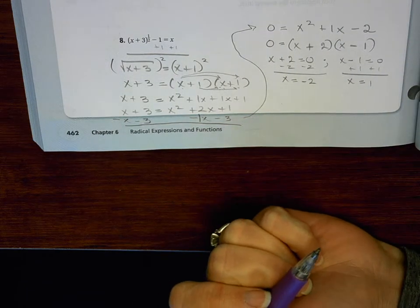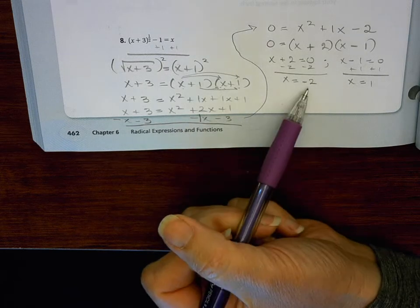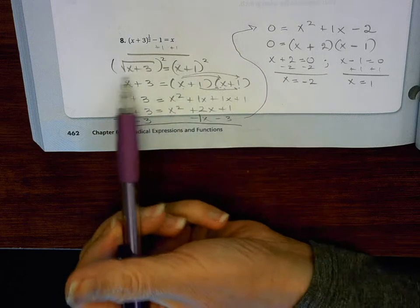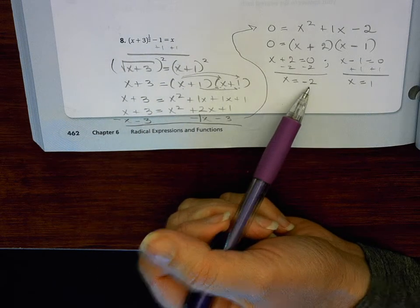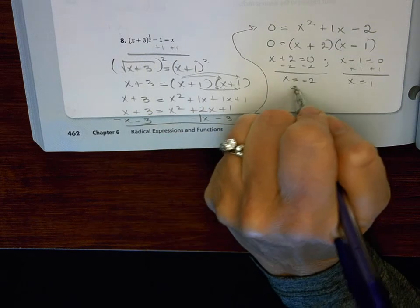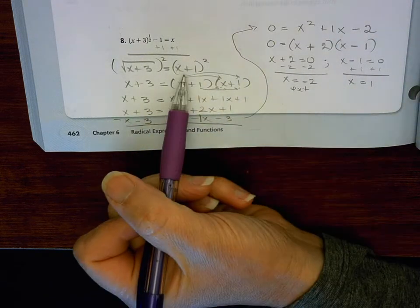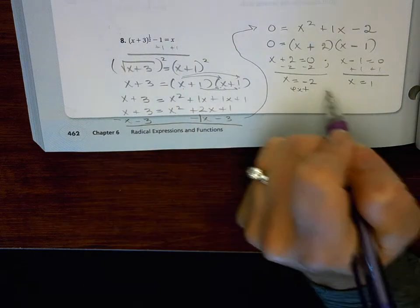So that means there is probably an extraneous solution. If I just do my shortcut, I can just know that the square root has to equal a positive number. So if I replace negative 2 into here, negative 2 plus 1 is a negative 1, so this is my extraneous. If I replace it with 1, 1 plus 1 is 2, and so then that is my good solution.